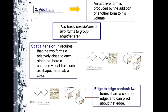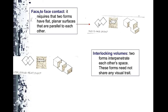The first possibility is spatial tension — forms are close together with just a small space between them, but there is visual tension when you look at them. The second is edge-to-edge contact — their corners or edges touch each other. Third is face-to-face — the planar surfaces of two cubes slide and contact each other along their wide surfaces, hence 'face to face.'